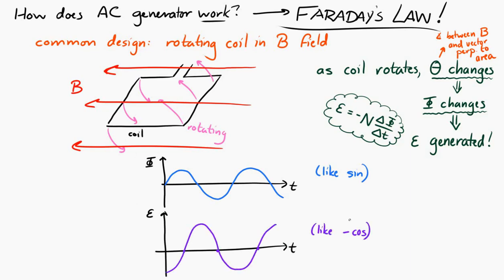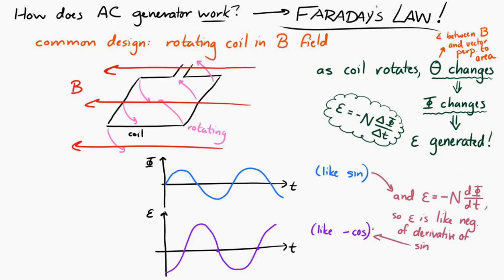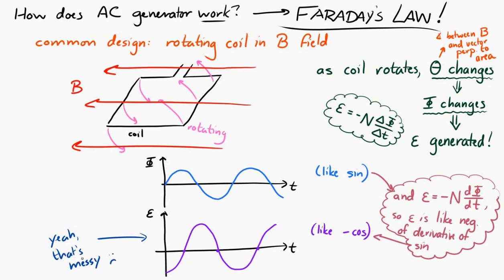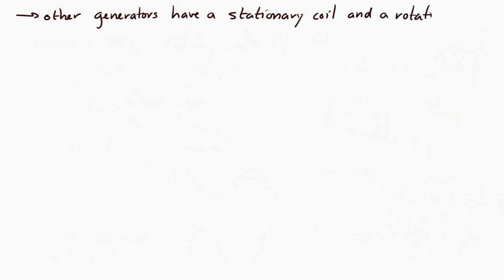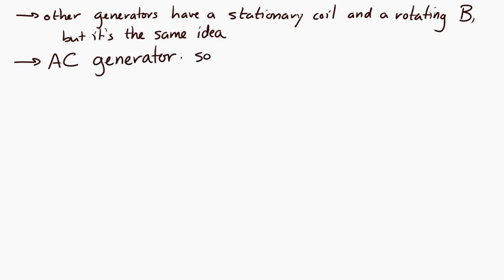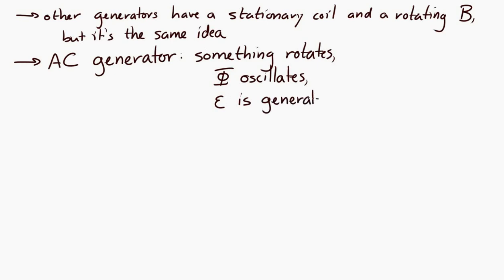If you're into calculus, the flux is drawn as a sine wave, and the EMF would be the derivative of that. The derivative of sine is negative cosine, so the EMF looks like a negative cosine. There are also designs for AC generators where you keep the coil stationary and rotate the magnetic field, but essentially it's the same idea. Whatever the design, in an AC generator something is rotating, causing the flux to oscillate and generating the oscillating EMF.